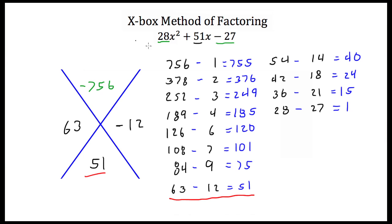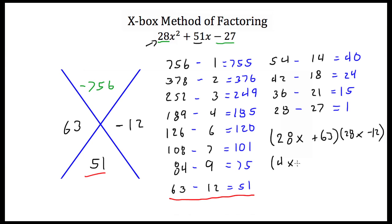Now we have 28 in front of our x squared, which means we're going to have 28x plus 63 times 28x minus 12. Now 28x times 28x will not get us 28x squared, so we're going to have to reduce these binomials. The first binomial, 28x plus 63, I can take out a 7 from both of these, so this becomes 4x plus 9. The second binomial, 28x minus 12, I can take a 4 out of both of these, so this becomes 7x minus 3.